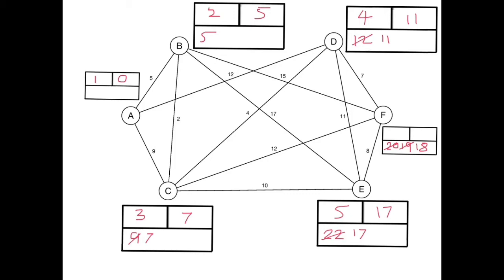It's not lower than the current label for F so that's all we can do with E. And then finally F gets labeled, it's labeled sixth and it has a permanent label of 18.